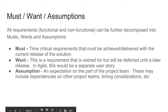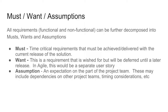Another way to view requirements is by using the must, want, and assumptions framework. All requirements, whether functional or non-functional, can be further classified into musts, wants, and assumptions. A must is a time-critical requirement that must be achieved or delivered within the current release of the solution. A want is a requirement that's wished for but can be deferred until a later release — in Agile or Scrum terms, we think of this as a separate user story, breaking requirements into smaller chunks to deliver accordingly. An assumption is the expectation on the part of the project team, which may include other dependencies, timing considerations, or overall characteristics you're making assumptions about regarding how the system will actually function.